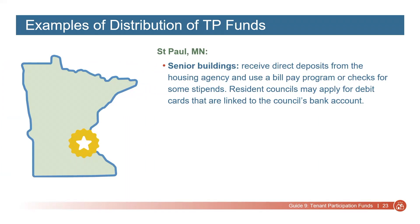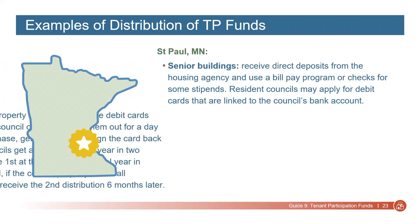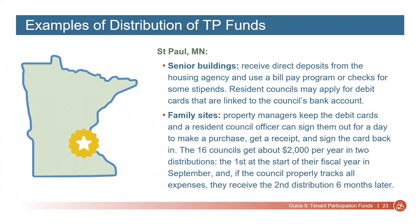The resident councils in St. Paul may apply for debit cards that are linked to their bank accounts. At the family sites, property managers keep the debit cards and a resident council officer can sign them out for a day to make a purchase, get a receipt, and sign the card back in. The 16 councils get about $2,000 per year in two distributions. They receive the first distribution at the start of their fiscal year in September. If the council properly tracks all of their expenses, they receive the remainder six months later.